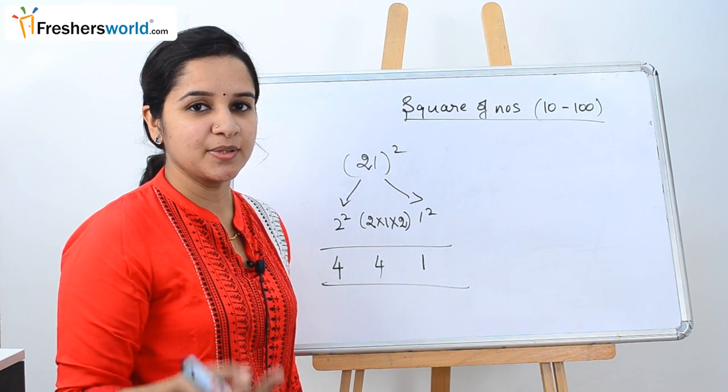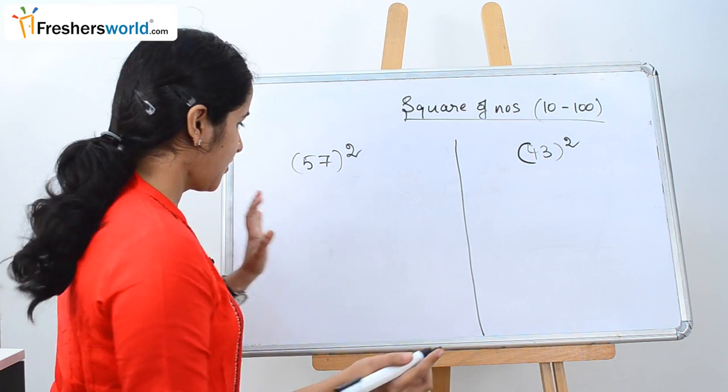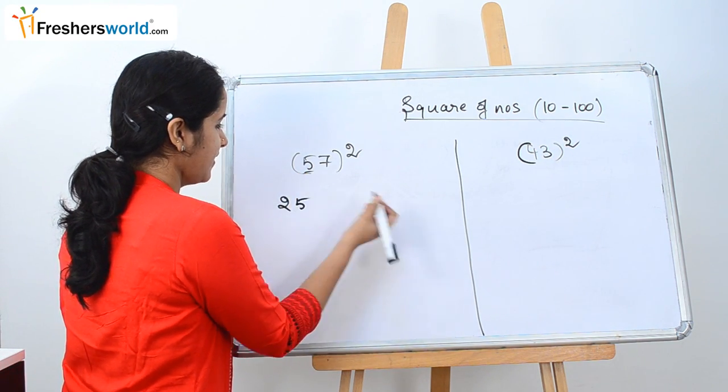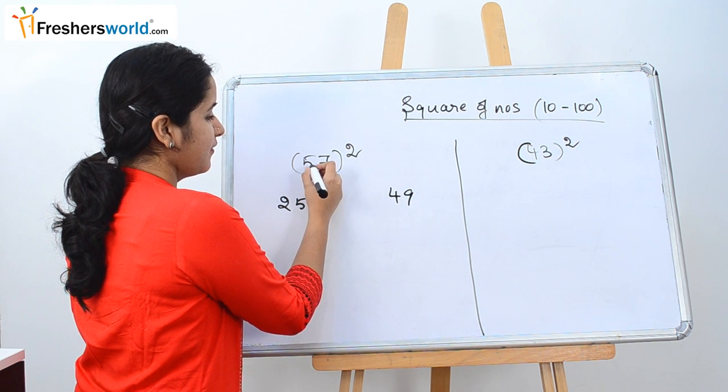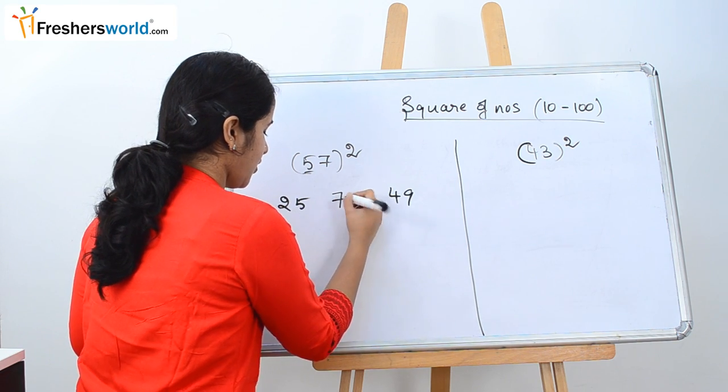So let's solve a couple of other sums to understand this much better. So the next question is 57 square. So as per our method, what we should do? First square the number which is nothing but 25, square this number which is nothing but 49. Then multiply 5 into 7 is 35, 35 into 2 is 70.